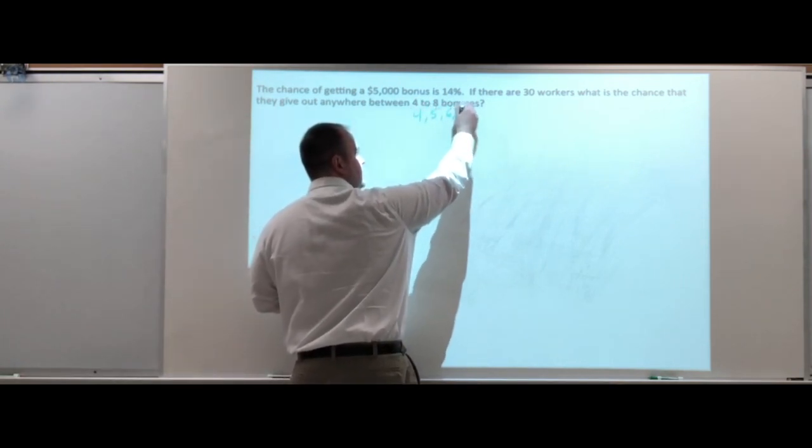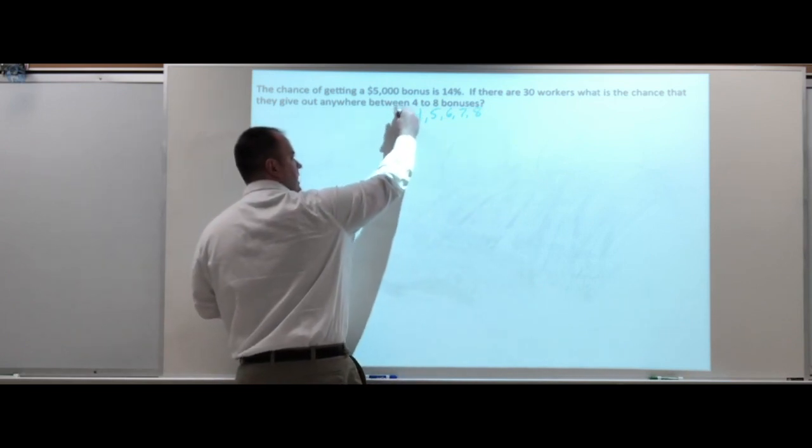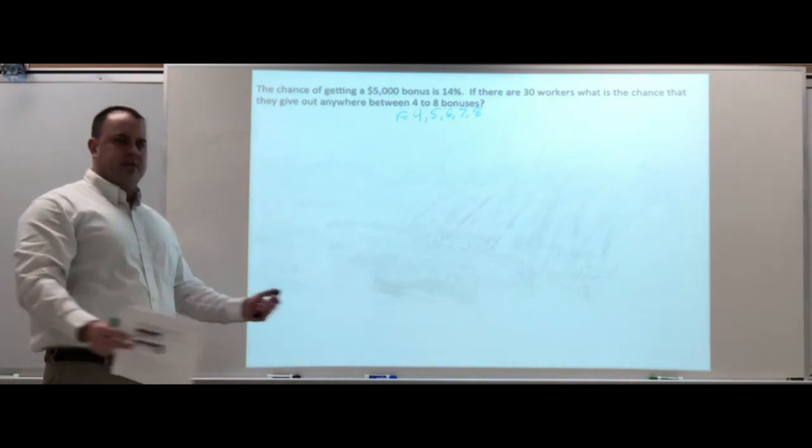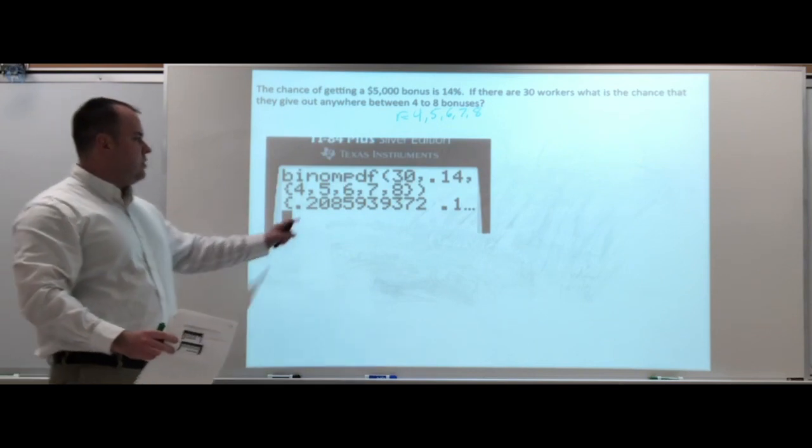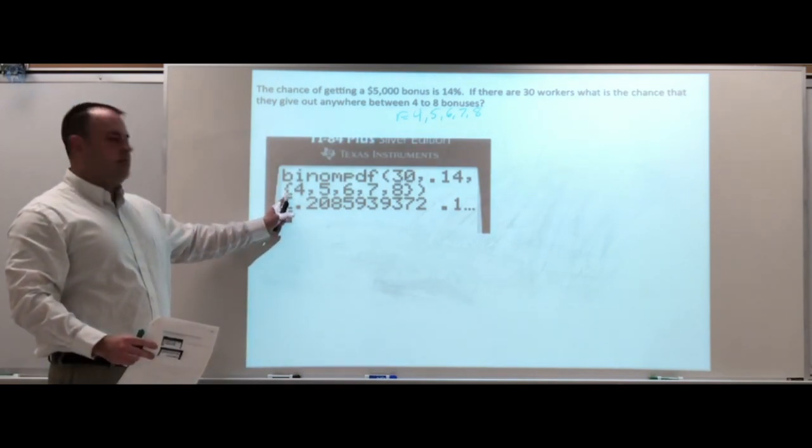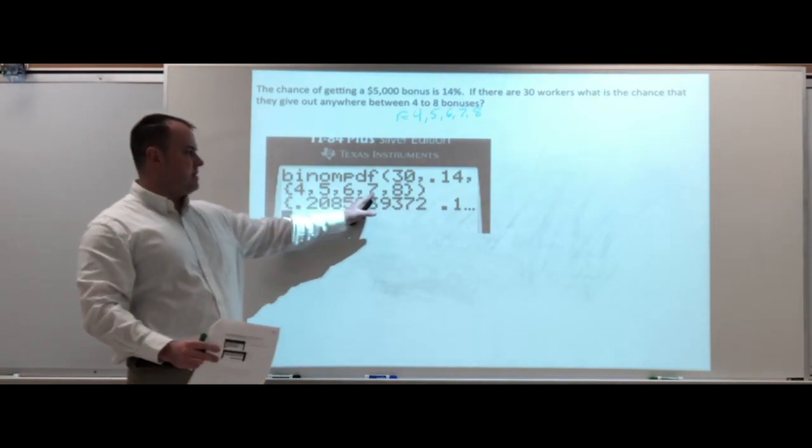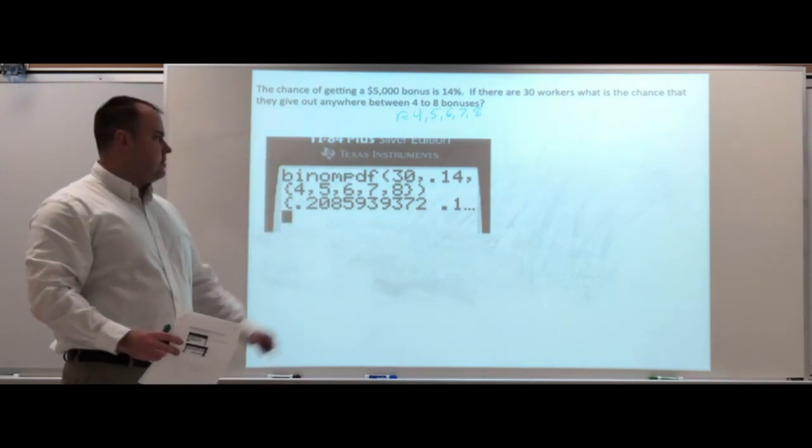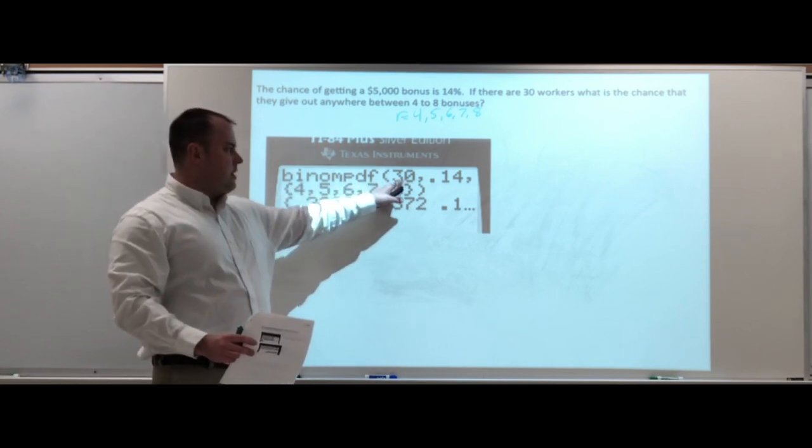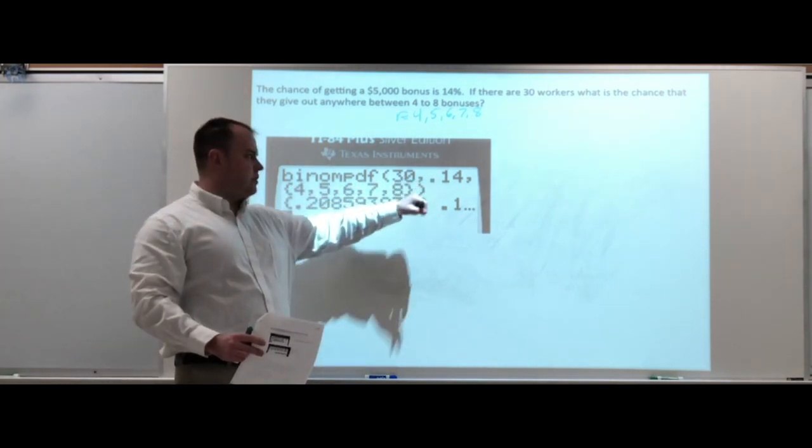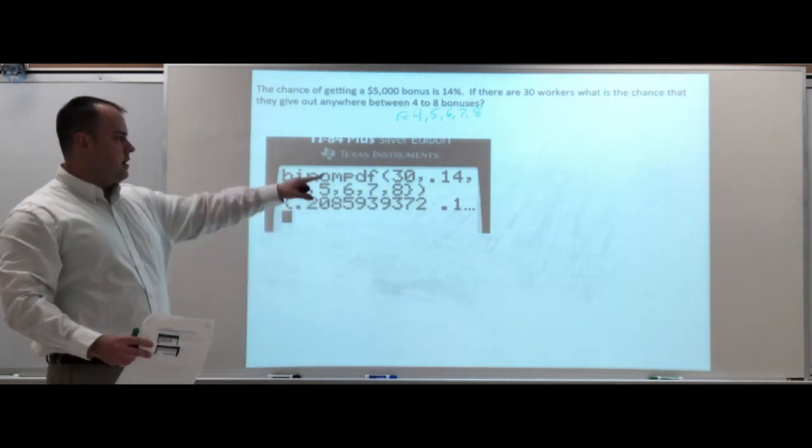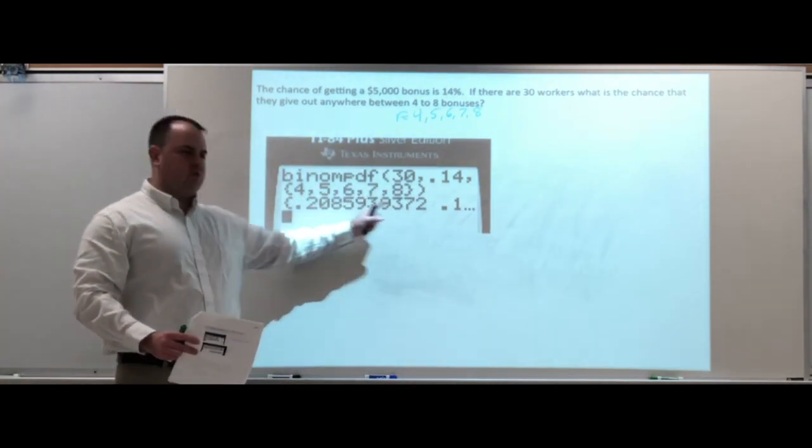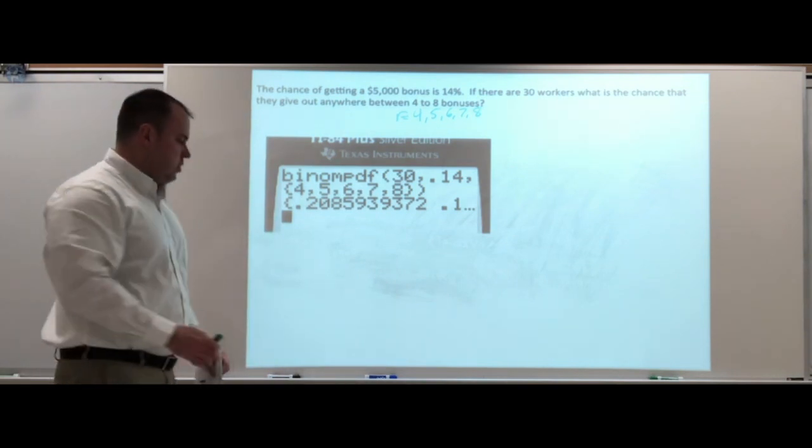Some ways you do this quickly: you could plug in each one, write down all the answers and add them up. Another way you could do it is if you hit second parenthesis and plug in as brackets—four comma five comma six seven and eight—and list all them, that might save you some time adding those up.